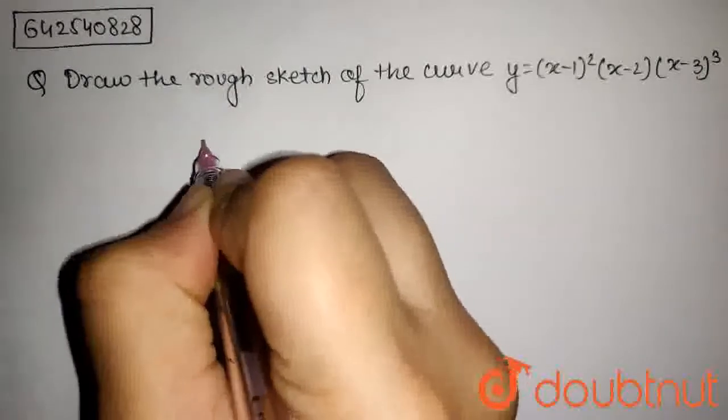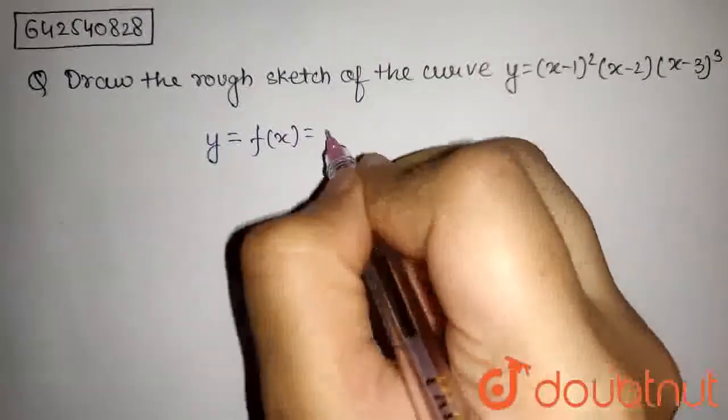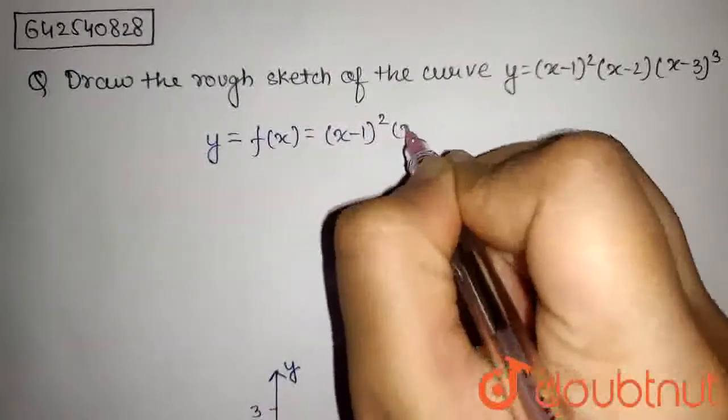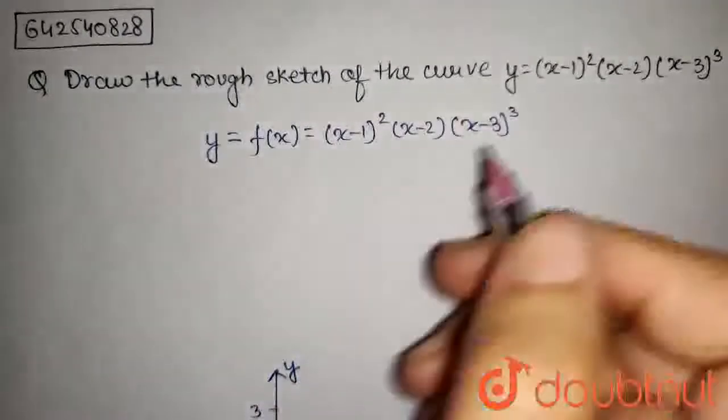Now, we have y equals f of x equals x minus 1 whole square, x minus 2, x minus 3 whole cube.